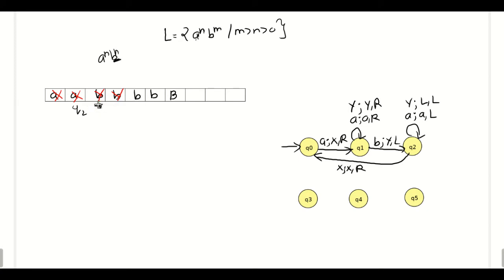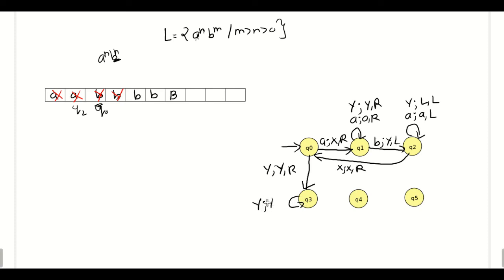Then the situation will be like this: from state q0, we will see the symbol y and follow the same procedure as done in the previous lectures. When at q0, if we see a y, we keep y as it is in the tape and the tape head moves towards the right side. This process will repeat until we process all the y's.